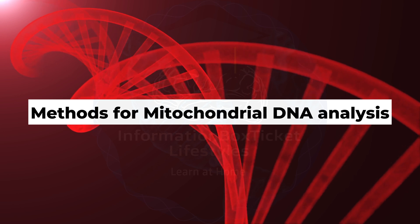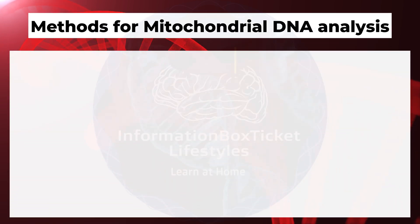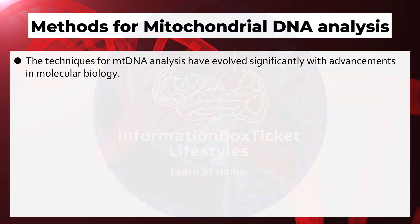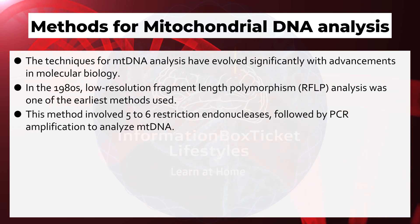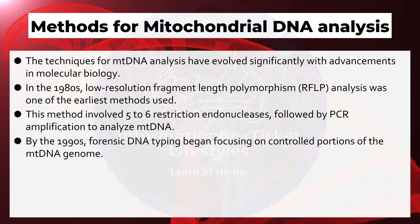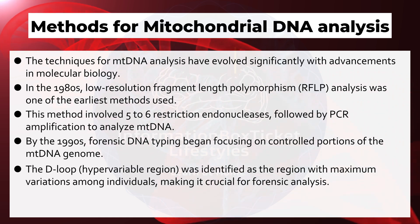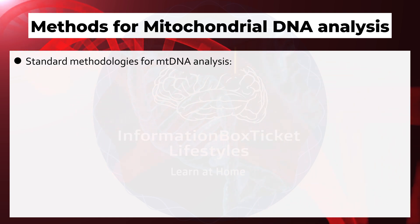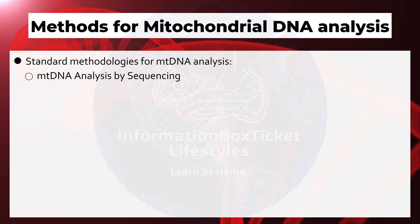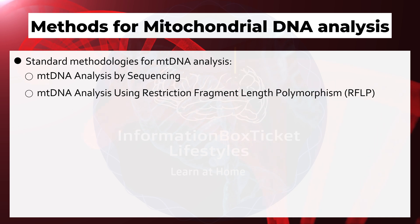The techniques for mitochondrial DNA analysis have evolved significantly with advancements in molecular biology. In the 1980s, low-resolution fragment-length polymorphism analysis was one of the earliest methods, involving 5–6 restriction endonucleases followed by PCR amplification. By the 1990s, forensic DNA typing began focusing on the D-loop hypervariable region, which displays maximum variation among individuals. Standard methodologies include mitochondrial DNA analysis by sequencing and by restriction fragment length polymorphism (RFLP).